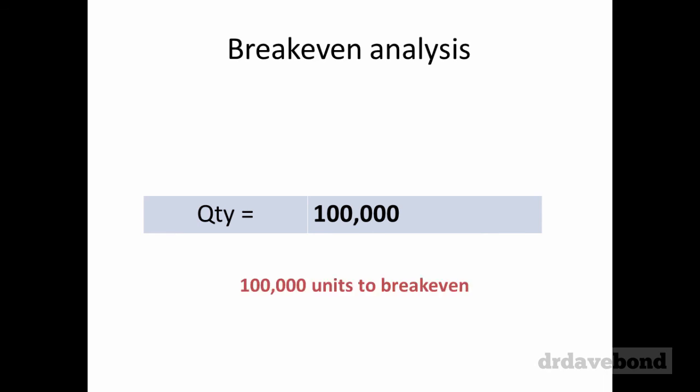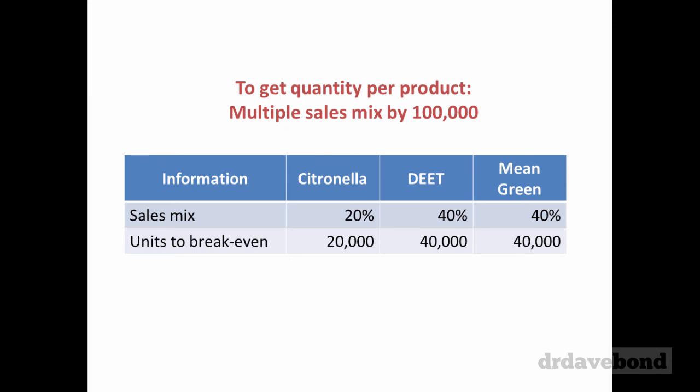So there are 100,000 units that need to be sold to breakeven. One final important thing in a multiple product environment: that 100,000 units needs to be split up across the different products. With a 20-40-40 mix, Citronella has 20,000 units to breakeven, DEET 40,000, and Mean Green 40,000. And that is how you do a breakeven analysis with multiple products.